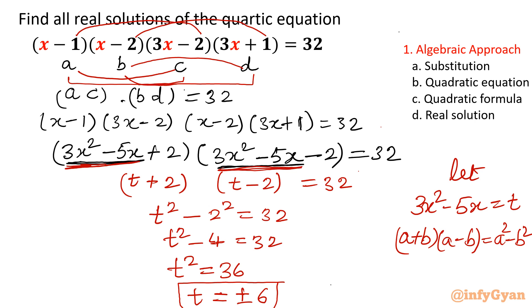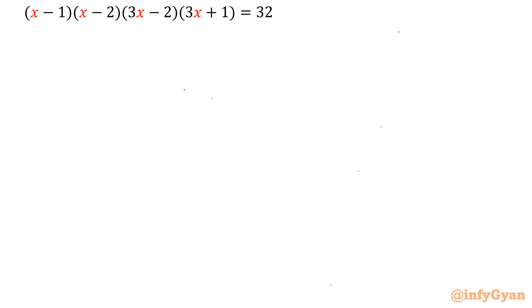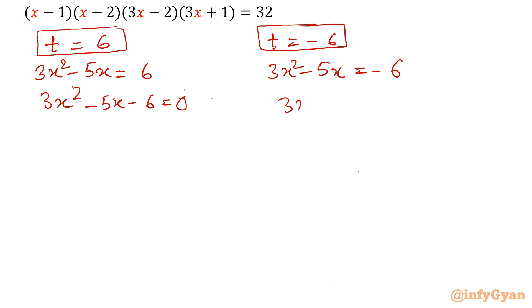Okay let's solve. Put back t equal to 3x² - 5x. t equals 6 and t equals minus 6. So 3x² - 5x equal to 6, and 3x² - 5x equal to minus 6. Taking all terms to the left side: 3x² - 5x - 6 = 0, and 3x² - 5x + 6 = 0.